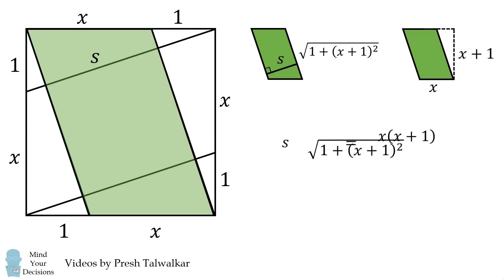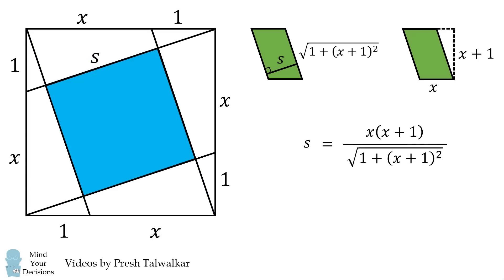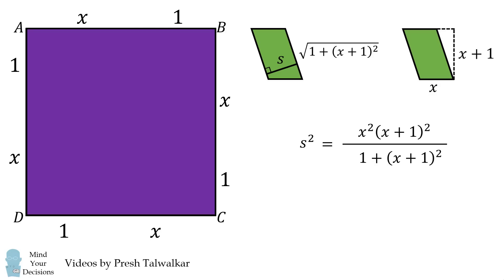We'll then solve this equation for s. We want the area of this square, which will be equal to s squared. We then want to divide it by the area of the entire square ABCD, which is equal to the quantity x plus 1 squared.